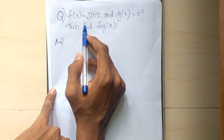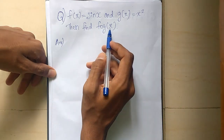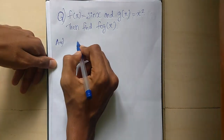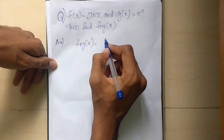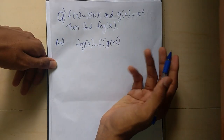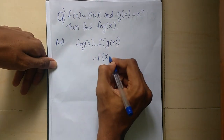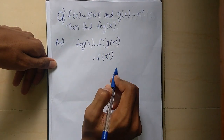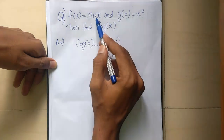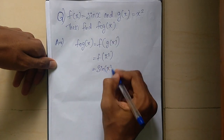Let's talk about this question. f of x equals sin x, g of x equals x squared. Let's find f of g of x, that is F composition G of x. So F composition G of x means f of g of x. f of g of x is equal to f of x squared. Since f of x is sin x, that gives sin of x squared. So sin(x²) equals sin(x²). This is the answer.